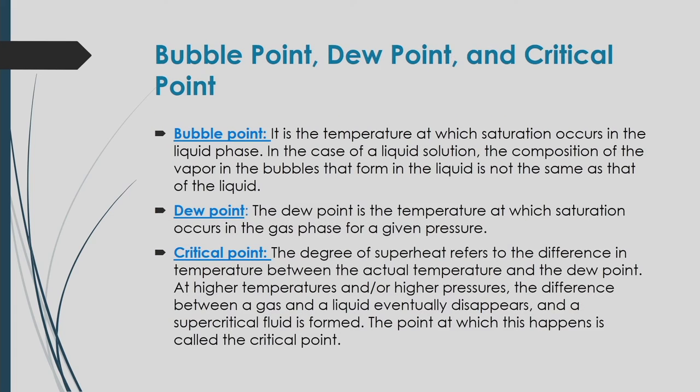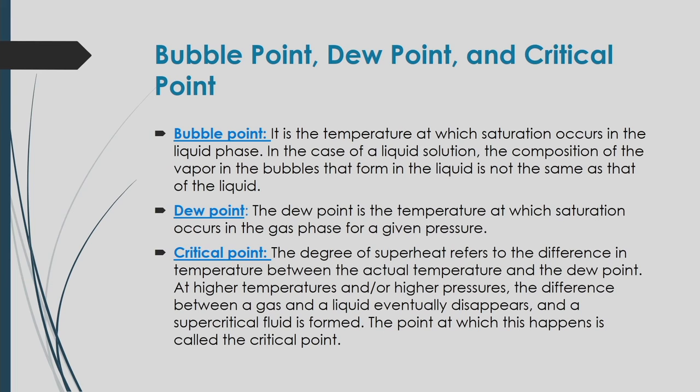The bubble point is the temperature at which saturation occurs in the liquid phase; in a liquid solution, the vapor composition in the bubbles differs from that of the liquid. The dew point is the temperature at which saturation occurs in the gas phase at a given pressure. The critical point refers to the supercritical condition — at higher temperatures and pressures, the difference between gas and liquid disappears and a supercritical fluid forms.